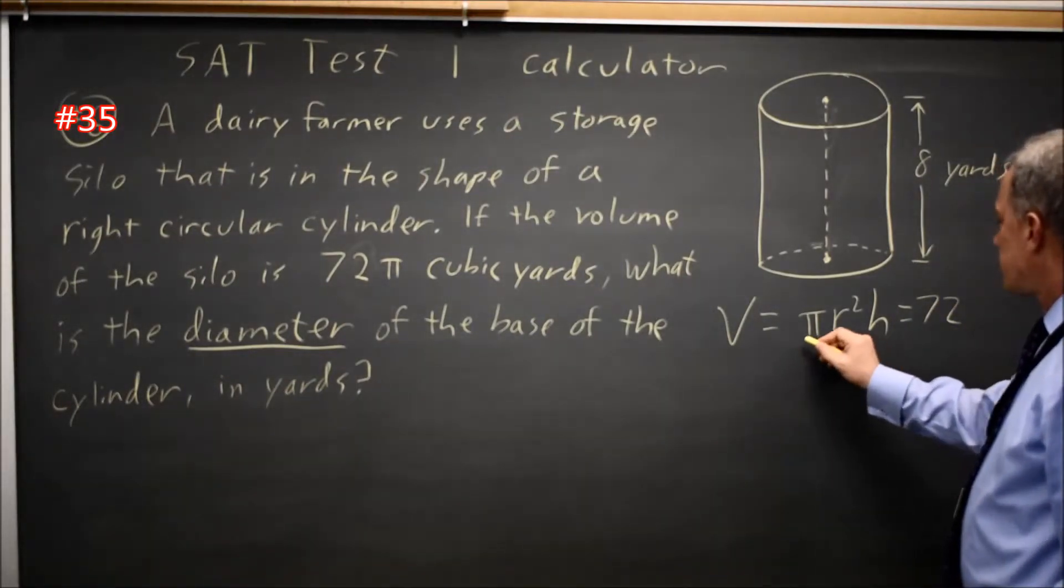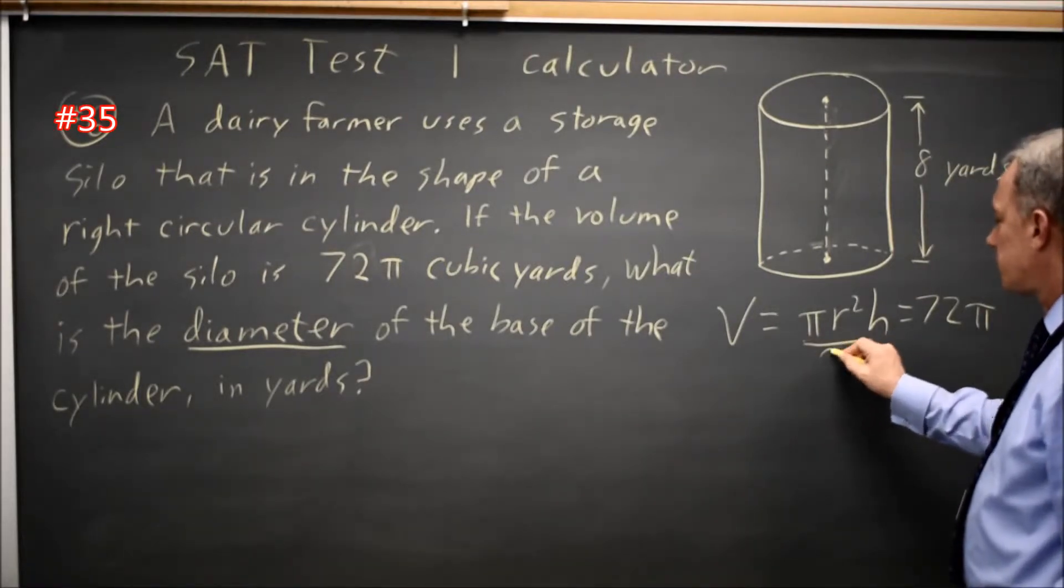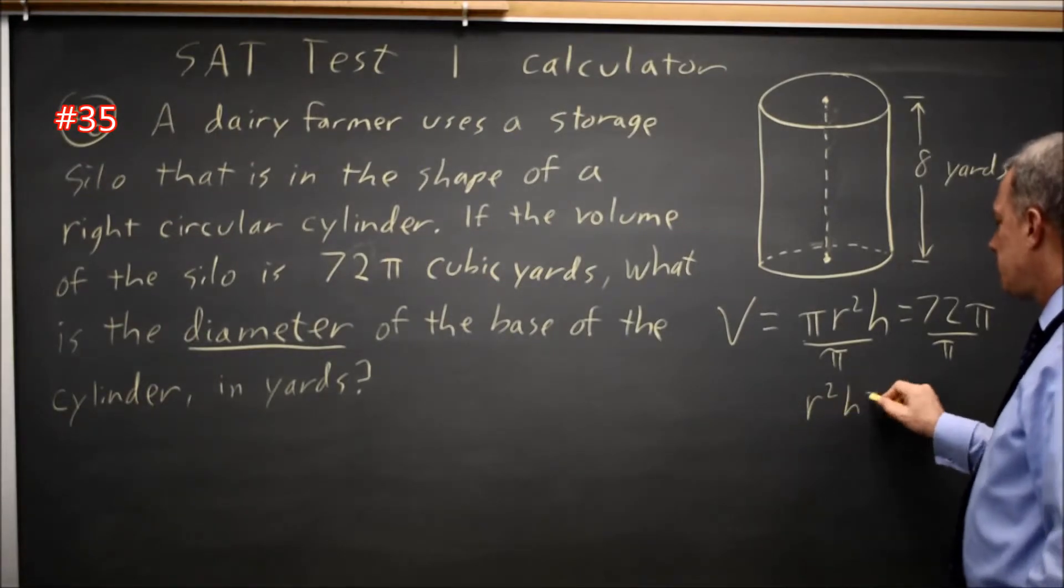If pi r squared h equals 72 pi, divide both sides by pi, and you get r squared h equals 72.